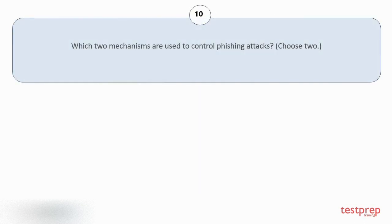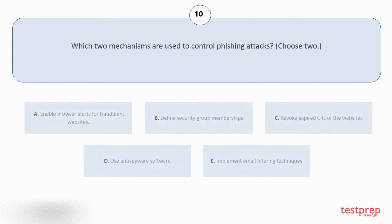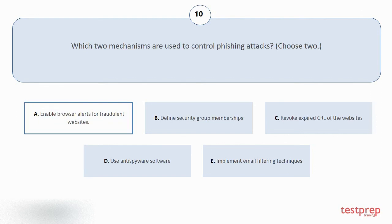Question number 10. Which two mechanisms are used to control phishing attacks? Choose two. Your options are: A. Enable browser alerts for fraudulent websites. B. Define security group memberships. C. Revoke expired CRL of the websites. D. Use anti-spyware software. E. Implement email filtering techniques. The correct answer is option A.